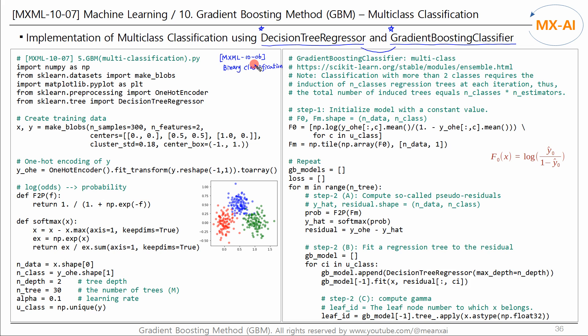This code is almost similar to the binary classification code seen in the last video. This is an extension of binary classification code to multiclass classification. The data we will use is like this. It is two-dimensional data with two features X and it consists of three clusters. There are three classes of Y, 0, 1, and 2. We generated 300 pieces of this data.